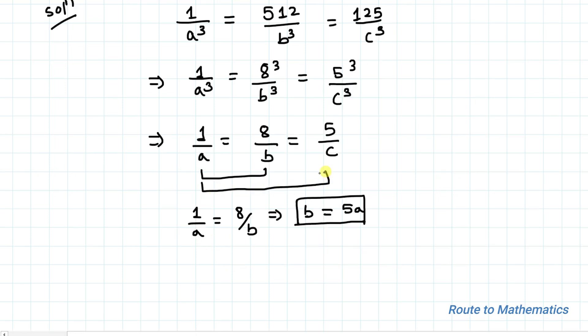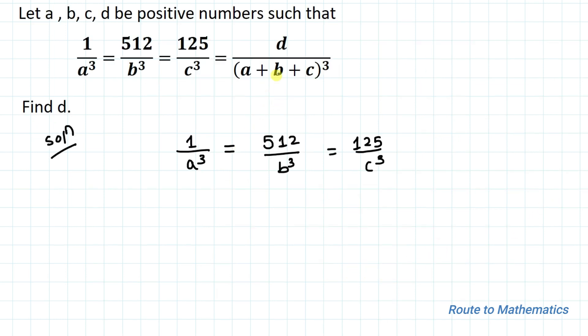In the next step we'll equate 1/a with 5/c. So we have 1/a = 5/c, which implies c = 5a. We found c in terms of a.